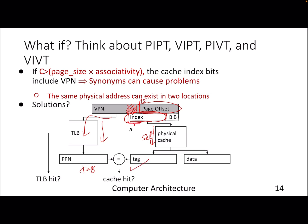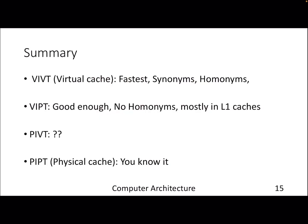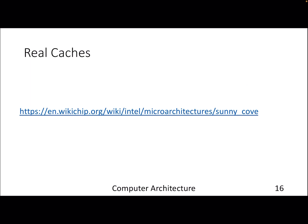In summary: a completely virtual cache (VIVT) is fastest with no need for translation but suffers from synonym and homonym problems. VIPT cache, assuming index bits are within the page offset, mostly avoids these issues and is used in L1 caches. PIPT (physically indexed, physically tagged) is what we discussed in previous lectures. Physically indexed and virtually tagged — think about whether that even makes sense.